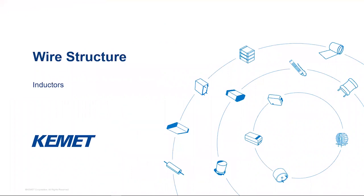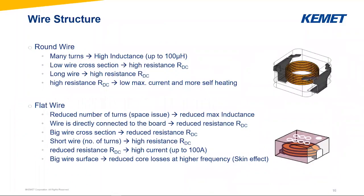Now let's go deeper into the wire structure, which is important. You can have either a round wire or a flat wire, as shown in the picture. Why do we use round wire sometimes and flat wire other times? There is no absolute advantage for one of them — each has advantages. If you take a round wire, you can make many turns and get a high inductance value up to 100 microhenry or above. But you have a low wire cross section, which means high resistance RDC. Also, many turns require a long wire, and a long wire also has high resistance. High resistance means you have a low maximum current and more self-heating of the component.